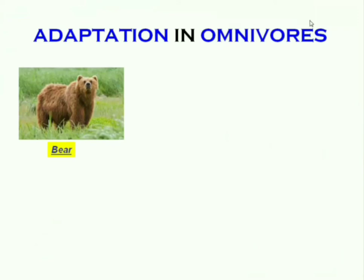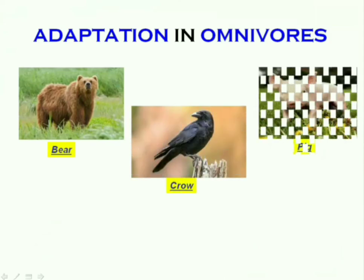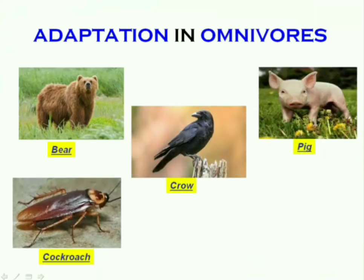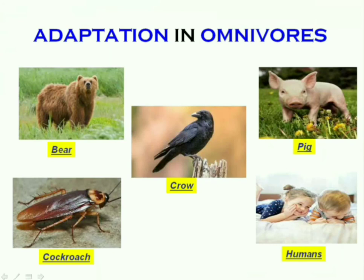Omnivores are animals that eat both plants and flesh of other animals — for example, bear, crow, pig, cockroach, and human beings. All these are omnivores and they are adapted to eat as well as digest both animals and plants.